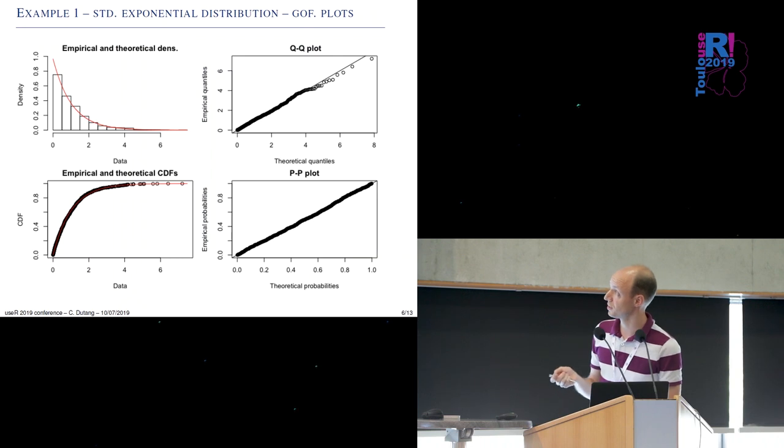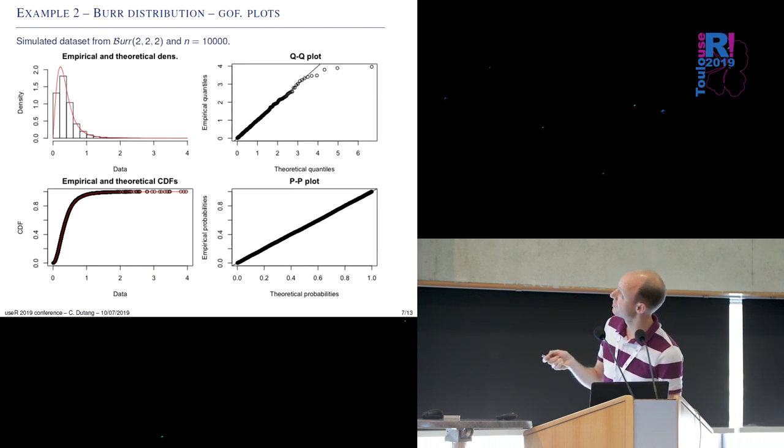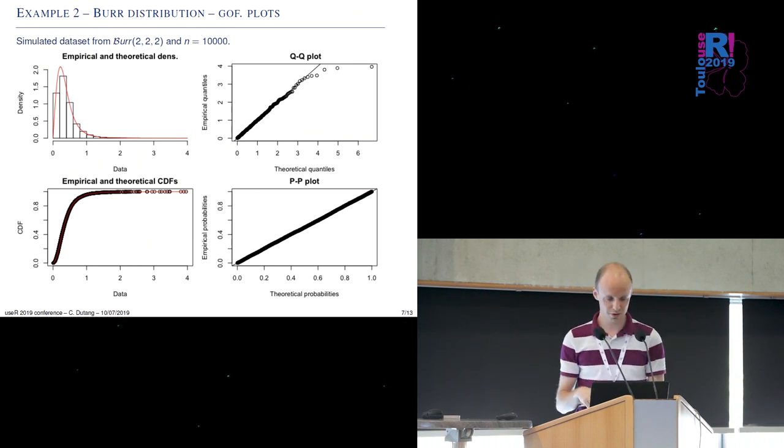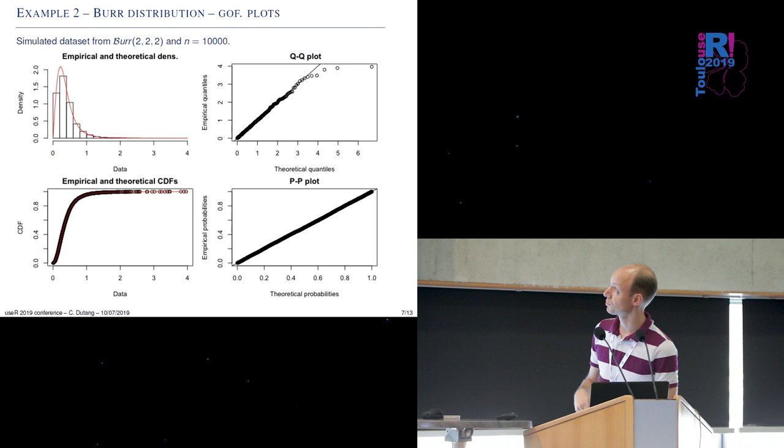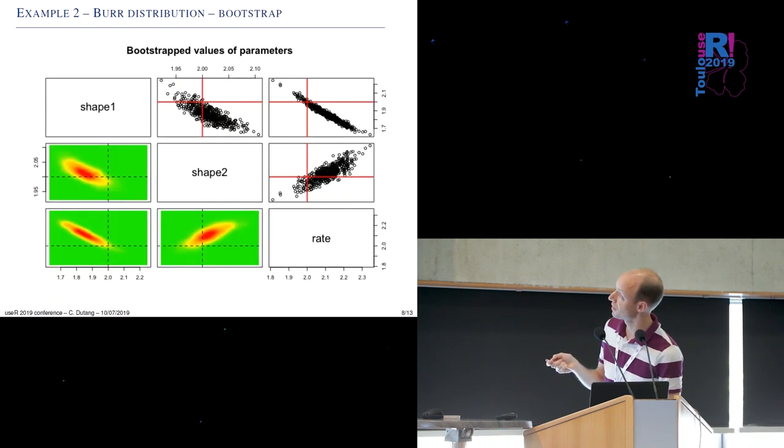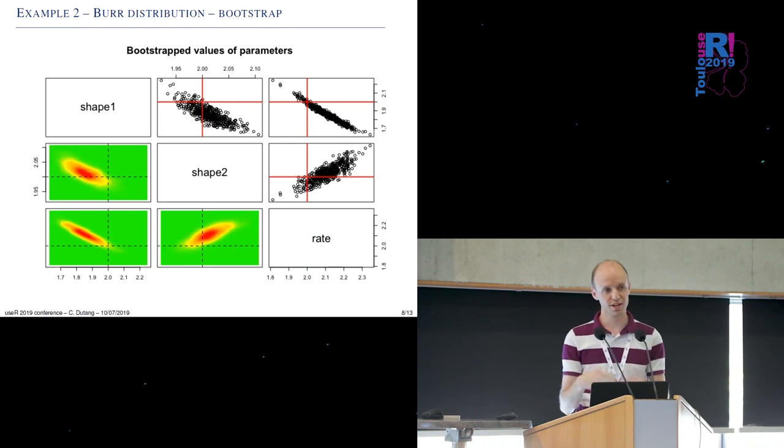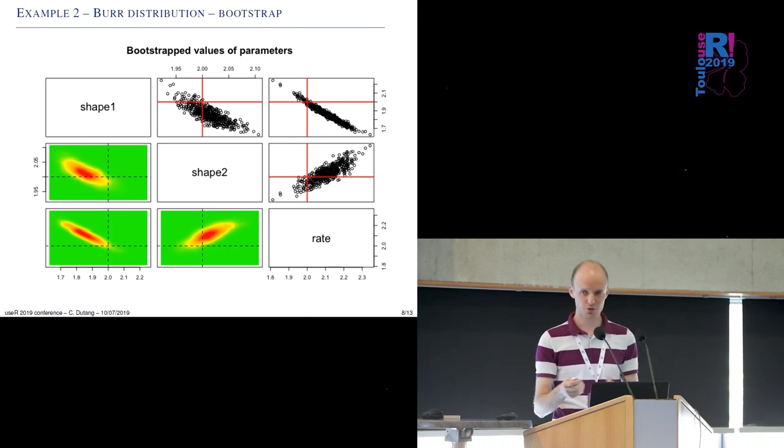And once we so it's already implemented so once we plot the output of fitdist actually we get all the automatic plot of that type of object and so we get the comparison on the density the cumulative distribution and the QQ plot. And here's another example not an exponential distribution but on a Burr distribution which is a Burr distribution quite widely used in actuarial science we see that we find a quite a very good estimation both in terms of CDF.